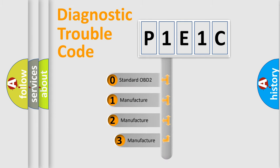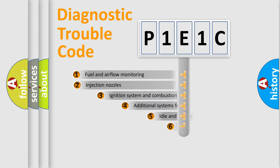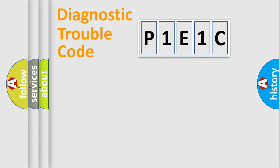If the second character is expressed as zero, it is a standardized error. In the case of numbers 1, 2, 3, it is a car-specific error. The third character specifies a subset of errors. The distribution shown is valid only for the standardized DTC code.